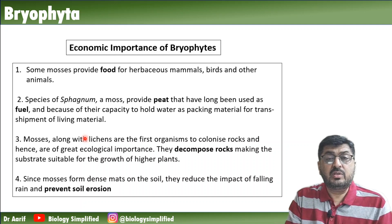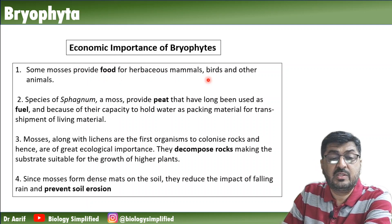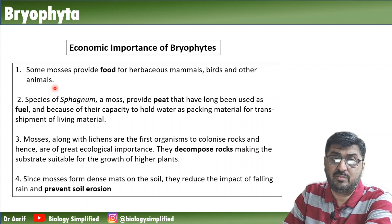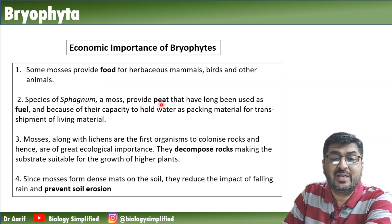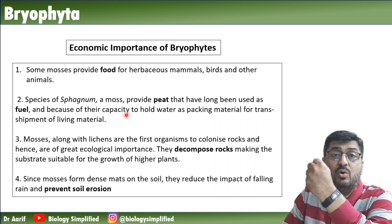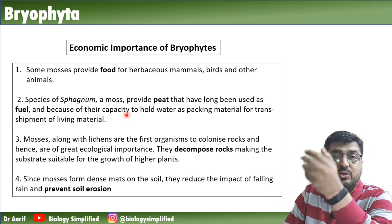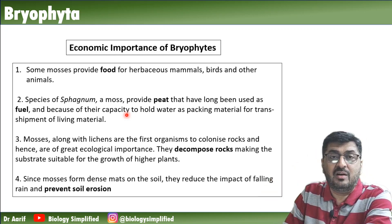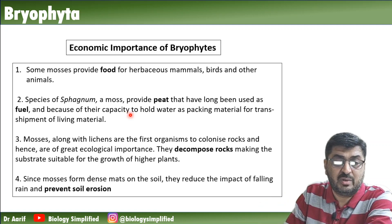Economic importance of Bryophyta: some mosses provide food for herbivorous animals, birds, and other animals. Species of Sphagnum, which is a moss, provide peat as a source of carbon. They have the capacity to hold water, so when you are transporting living tissue requiring an aquatic medium, Sphagnum is used as a packaging and transportation material.